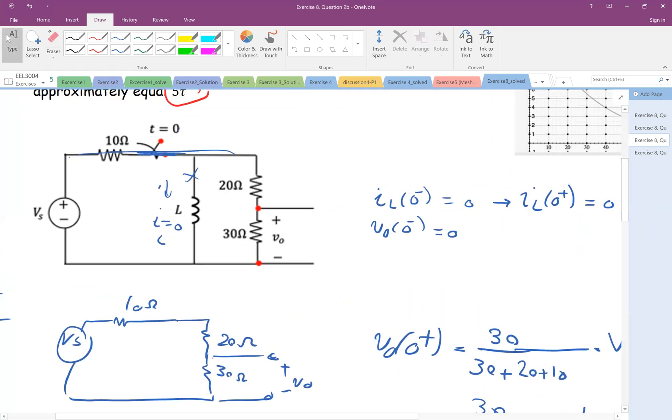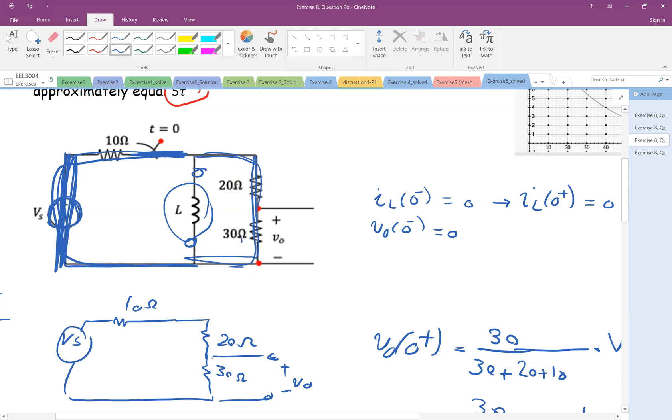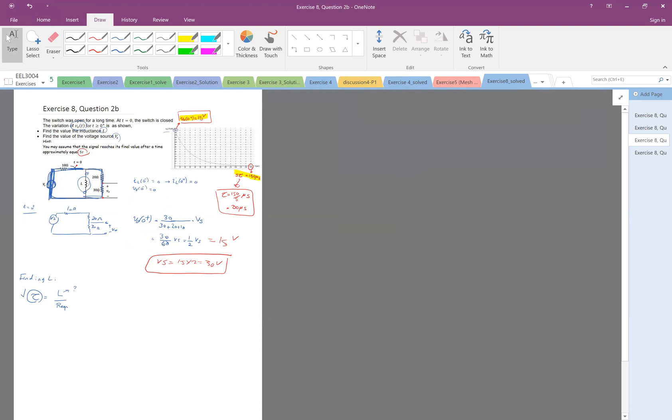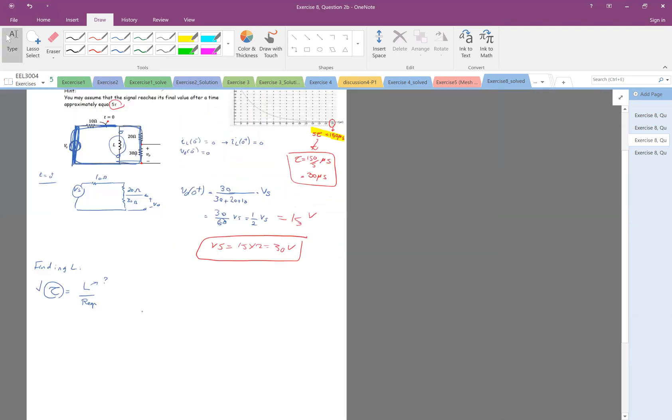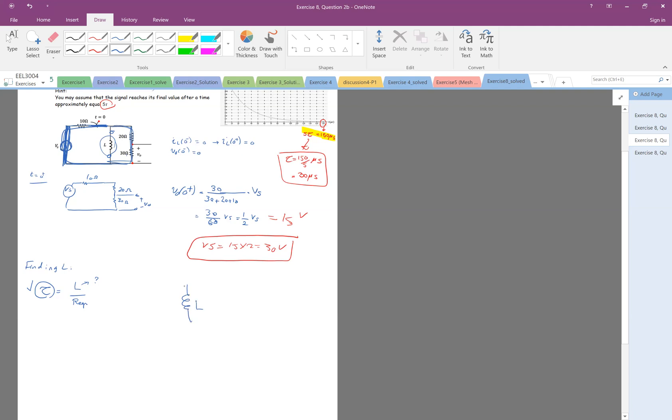The switch was closed, so this is closed. And also remember, for R equivalent, you need to inactivate or zero the independent sources. So if I short-circuit this and if I look at the point of view of L, what L sees, it sees a 10 ohm here and it sees a 30 plus 20, which is 50, there.